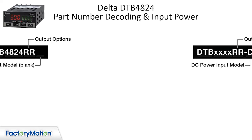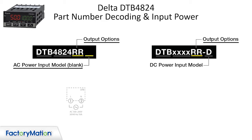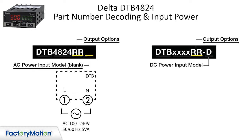The alpha characters of the part number designate the controller input power and output configuration. The first two alpha characters are the outputs. The last character is for AC or DC input power. The AC input models are blank, while the DC input models are designated with a D as the third character.